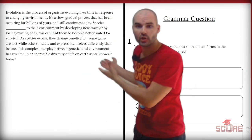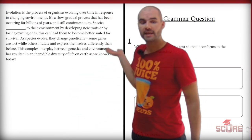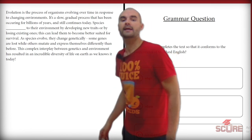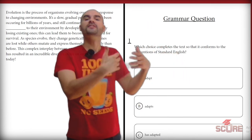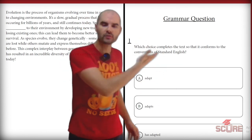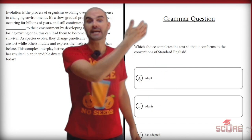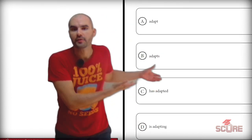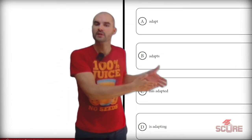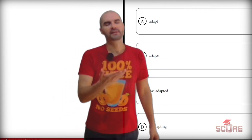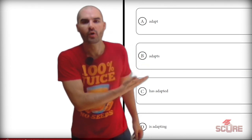For question one, I need to look at where the blank is. It says 'species blank to their environment' — that is all I need to read. Since species would be replaced with 'they,' I just need to find a word that works with they. The first option, 'they adapt,' is perfect. The other three options would only work if the subject was he, she, or it. Anytime you see three answers that have something in common, the answer is almost always the other one.